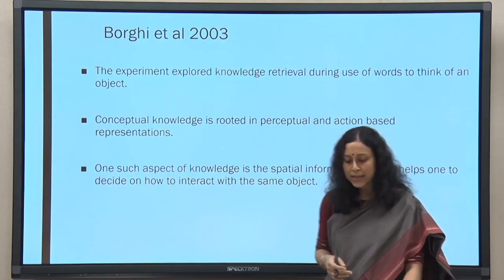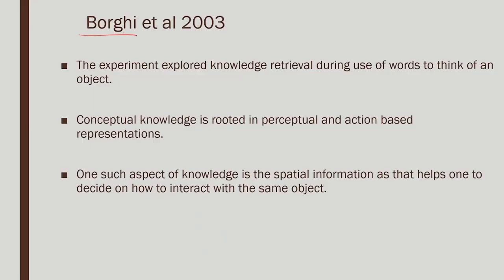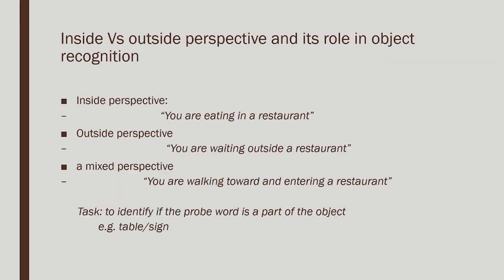This is proof of simulation. Another important study explored knowledge retrieval during use of words to think of an object. So far we have seen shape, orientation, and visibility. In this case they say that if thinking of a word makes you simulate the whole thing — because conceptual knowledge is rooted in perceptual and action-based representations — then one such aspect of knowledge is the spatial information, which is very important to decide how to interact with an object, how far it is, and what other aspects of the scene are present.